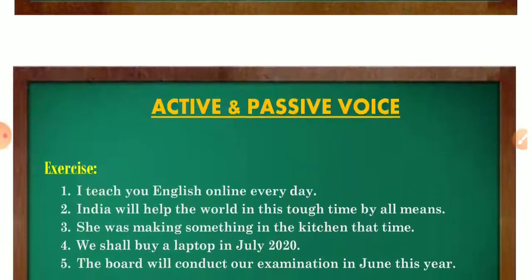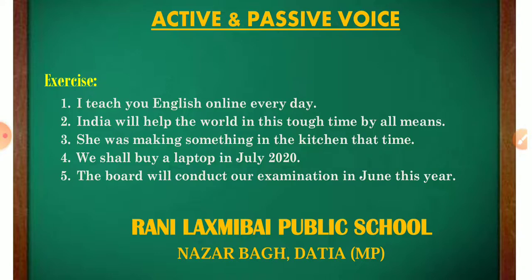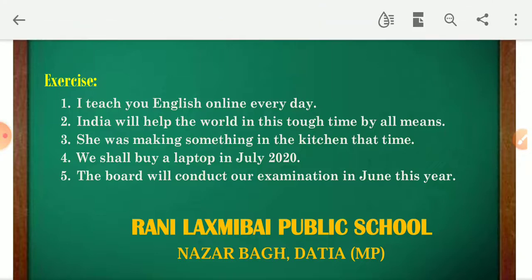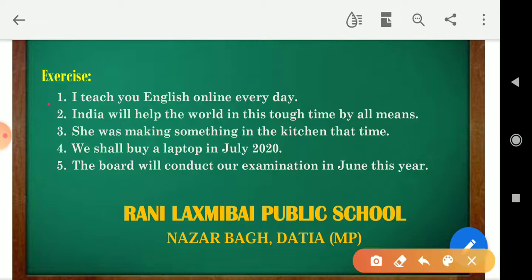Now there are some exercises. There are five sentences — since you have read everything and understood, try them. For the first sentence: 'I teach you English online every day.' Here 'teach' is the main verb and 'you' is the object, so start with 'you.' Since 'teach' is first form, according to the table you put 'are.' The third form of 'teach' is 'taught.' So the passive voice is: 'You are taught English by me online every day.' Likewise, make the remaining five sentences.